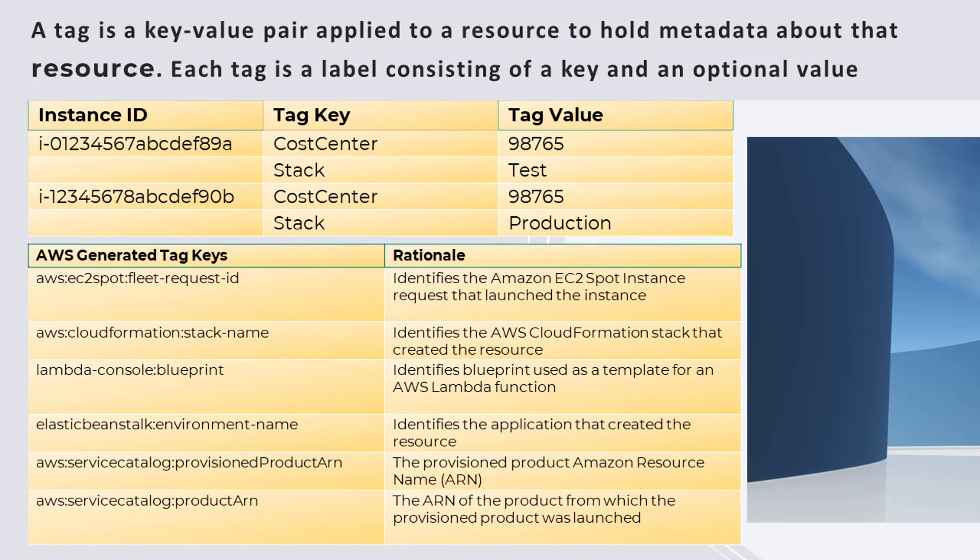As your AWS usage grows to many resource types spanning multiple applications, you'll need a mechanism to track which resources are assigned to which application — a mechanism to support your operational activities such as cost monitoring, incident management, patching, backup, and access control.